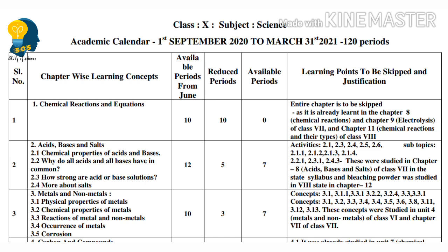We call these the sub-topics. 2.11 — Acids and Bases in the Laboratory — this is the main topic. Then 2.12 — How Do Acids and Bases React with Metals? — this is also a main topic.